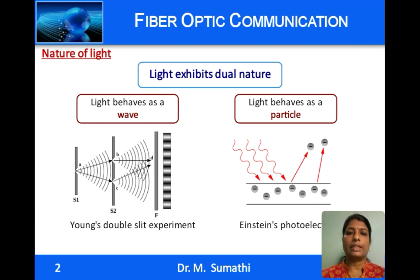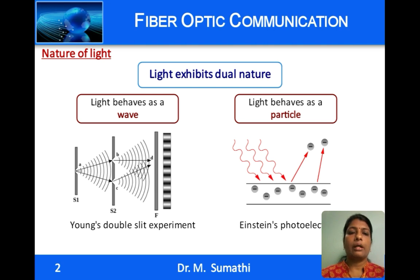Light has been studied over centuries and various theories and models proposed at different periods of time. We know light exhibits dual nature — that of a wave and that of a particle. The wave nature of light can be explained using Young's double slit experiment, where interference and superposition produce alternate dark and light bands. The particle nature of light can be shown using Einstein's photoelectric effect, where light incident on a material ejects electrons.